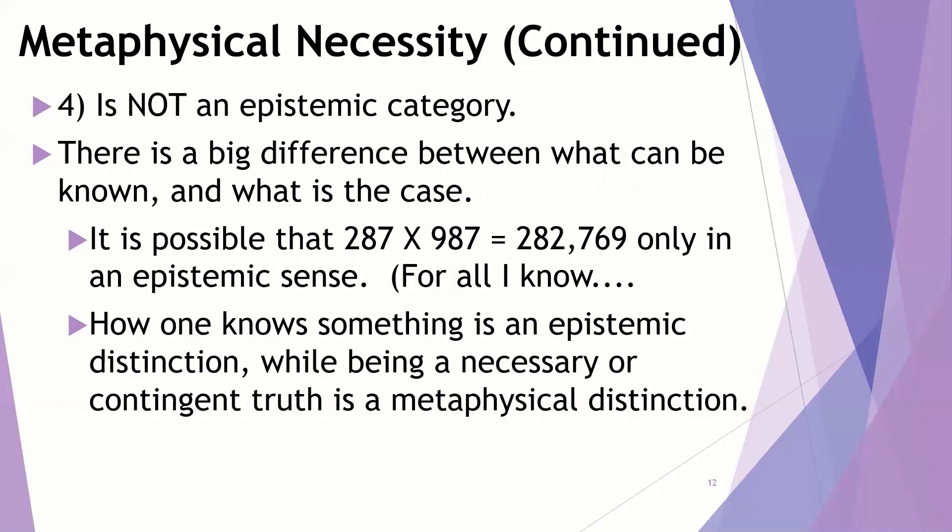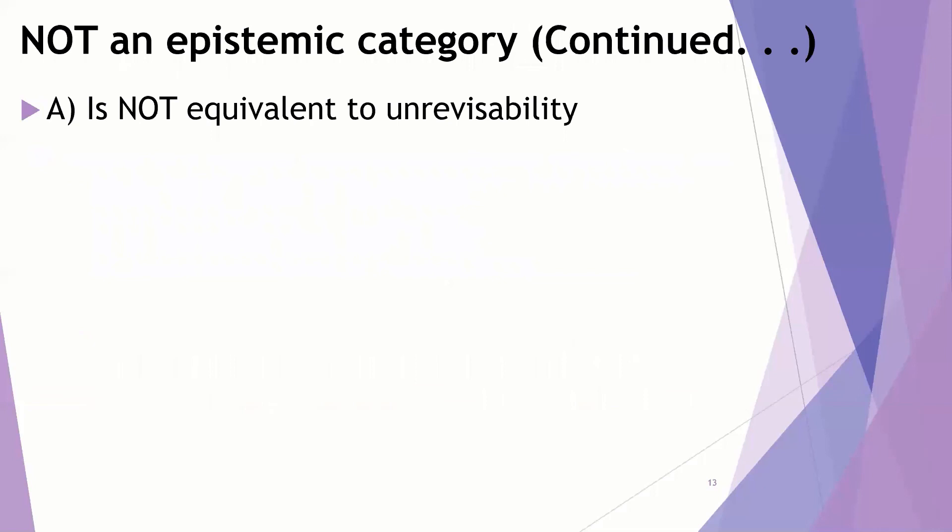Just to clarify a bit more, we're not talking about unrevisability when we say something's metaphysically necessary. That would be an epistemic category. For example, I was born in Iowa. That's unrevisable. Now that that's been done, that's the case, that can't be changed. But that doesn't mean that's a metaphysical necessity.